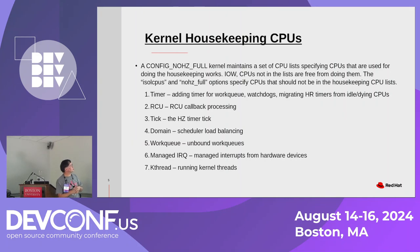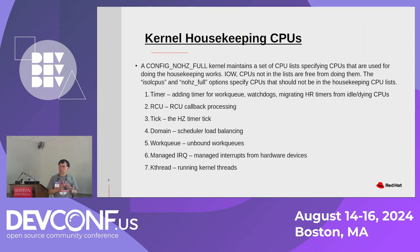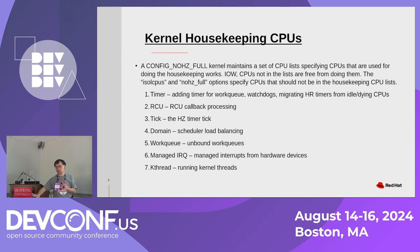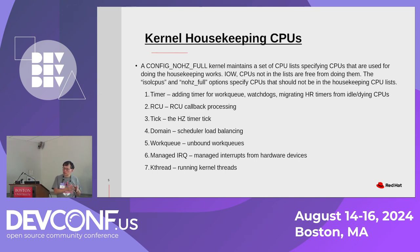There is also scheduler load balancing. The scheduler needs to balance tasks across CPUs to optimize usage. If multiple tasks need one CPU, they time-share, but if idle CPUs are available, tasks can be moved there. The scheduler constantly moves tasks from one CPU to the next — depending on your objective: for energy saving, you consolidate tasks on fewer CPUs; for maximum throughput, you spread tasks across all available CPUs.